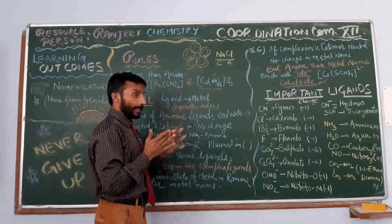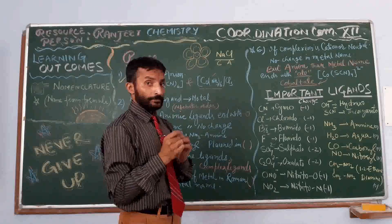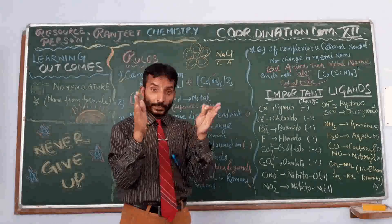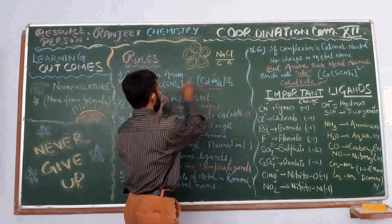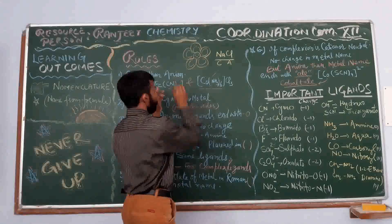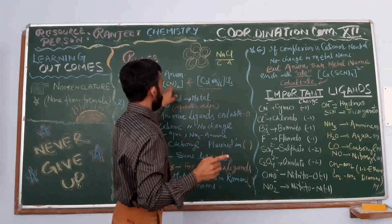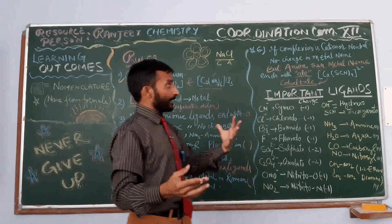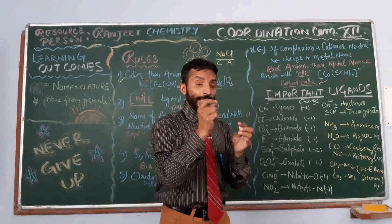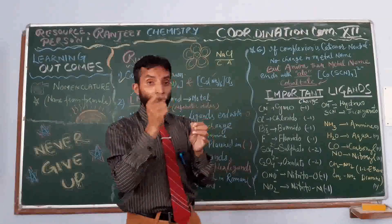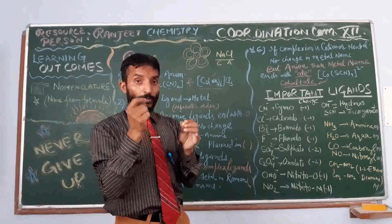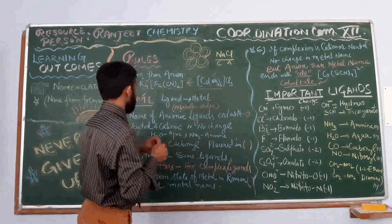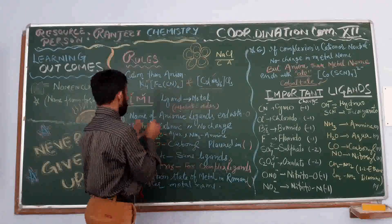Ligands' names are written alphabetically when there is more than one type of ligand present. When the complex is homoleptic, there is only one type of ligand. But when it is heteroleptic, the ligands are named alphabetically — from their names they are written alphabetically. We will solve examples later on.